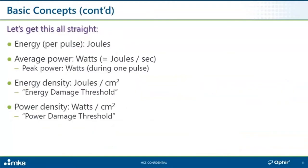Let's just get all this straight. Energy per pulse is measured in joules. Average power is the rate of flow of joules per second, or watts. Peak power is the rate of flow of joules — in watts — but during the course of one pulse: the instantaneous power. Not at all the same thing, as you saw — kilowatt versus watt.